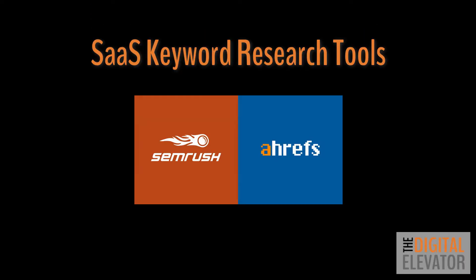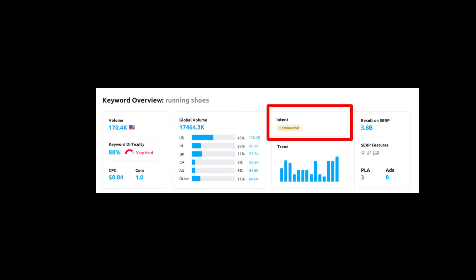Performing the actual keyword research can be done with your favorite keyword research tool, but finding the intent of these keywords is generally a manual process. Our team uses Ahrefs for keyword research but also likes the SEMrush keyword research tool because it actually provides an intent metric for you. While this tool can be very useful, I still recommend looking at the SERPs to make sure you're going after keyword intent properly.